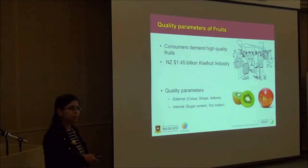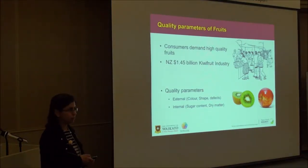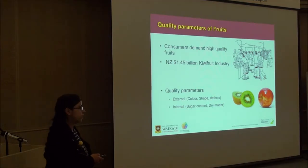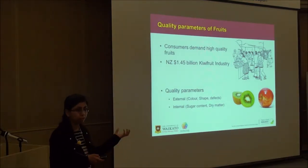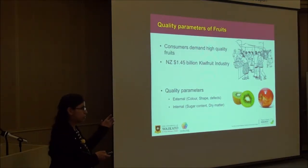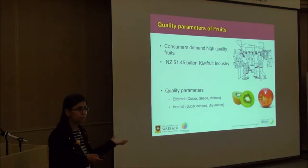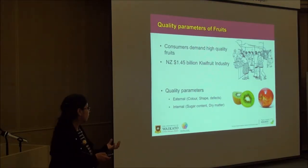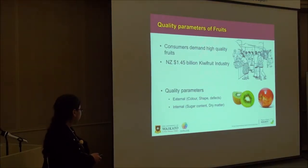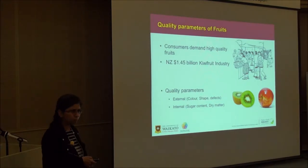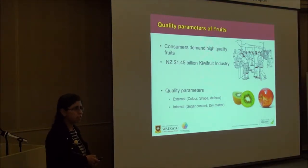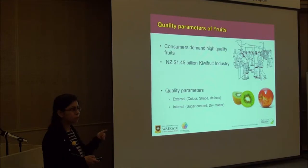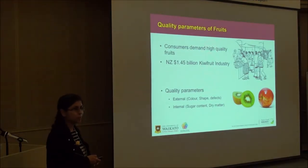There are two different kinds of quality parameters. You can either go with the external ones — you pick up the good food, check the shape, firmness, press it, and no defects. The internal quality parameters are sugar content and dry matter. You always like to eat sweet and tasty food, and that is what I am doing with NIR spectroscopy.